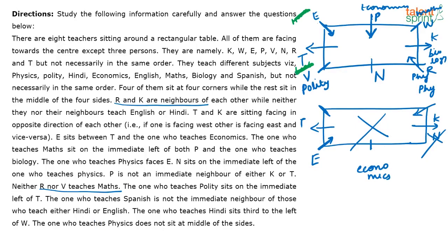Now look at Hindi and English. R and K are neighbors while neither they nor their neighbors teach English or Hindi. So R and K's neighbors will also not teach English or Hindi. Therefore N cannot teach English or Hindi, and English and Hindi have to be taught by T and E. N is going to teach Spanish because that's the only subject left for N. T and E have to teach Hindi and English — but we don't know which is which yet.